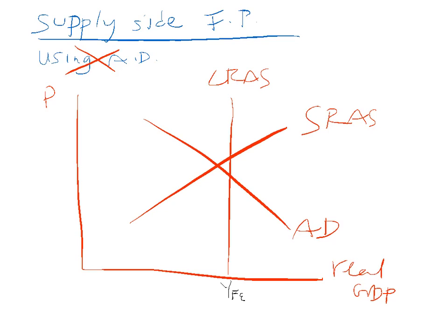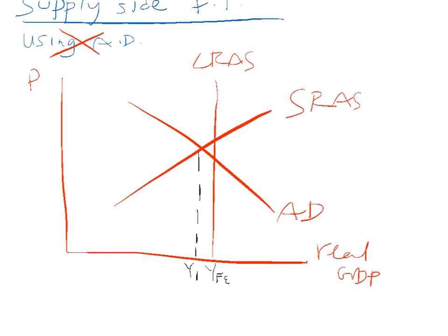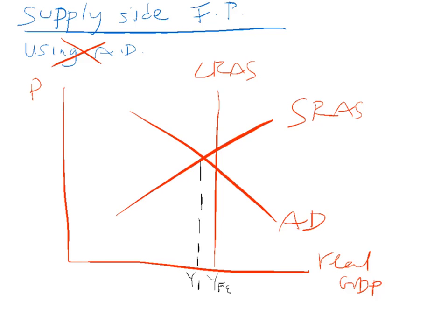We want to be here in the long run. We are currently here. So we have a recessionary gap equal to this area over here. So how do we get to our full employment level of output, to potential output?